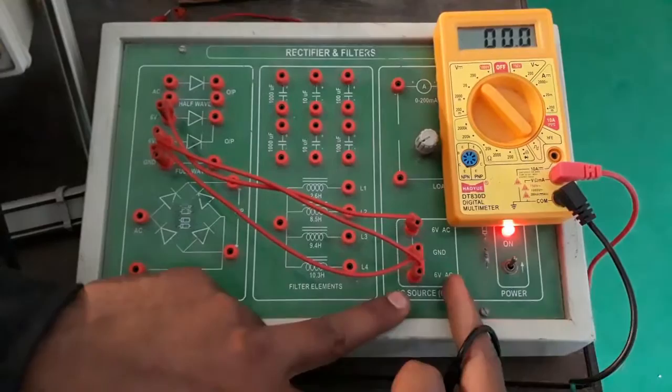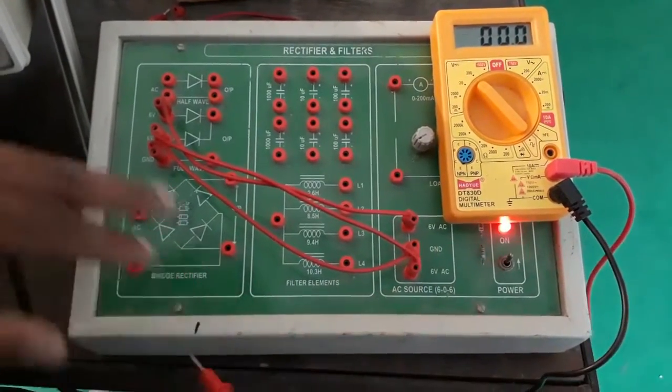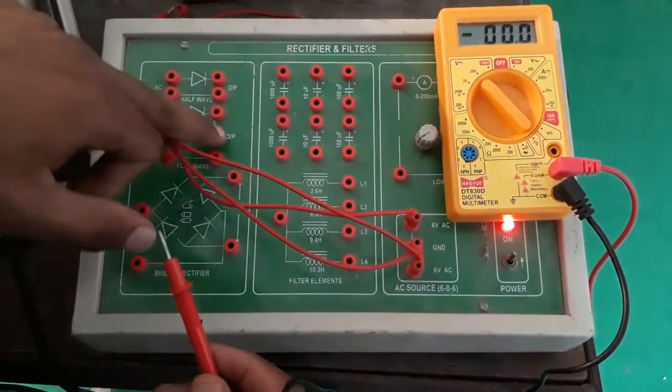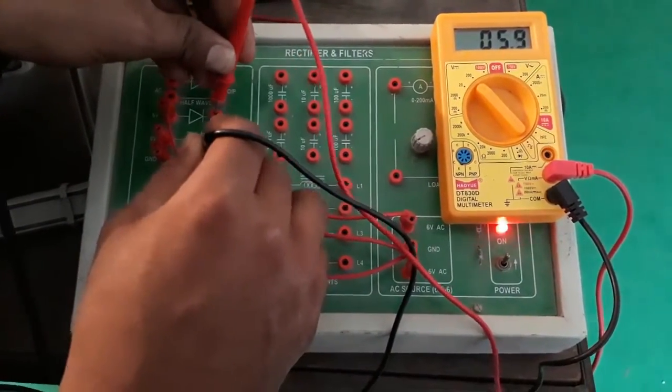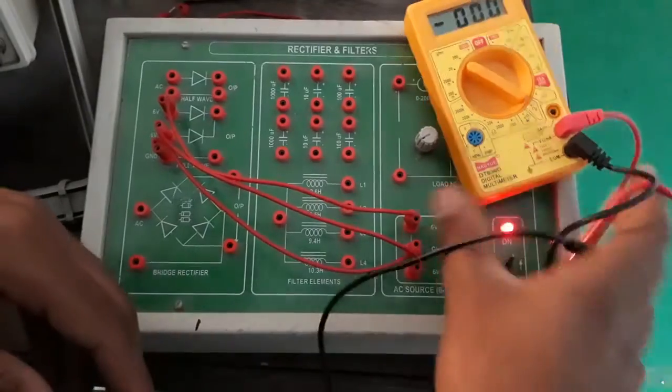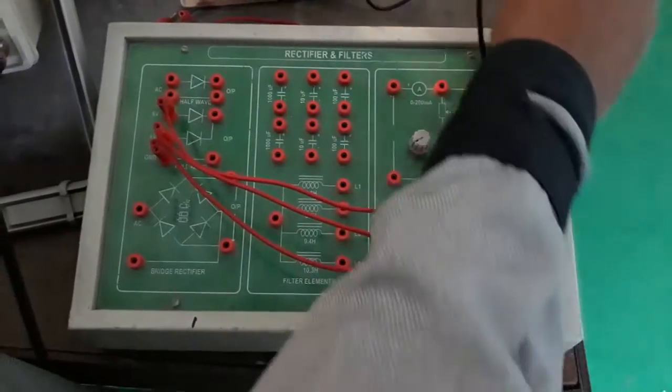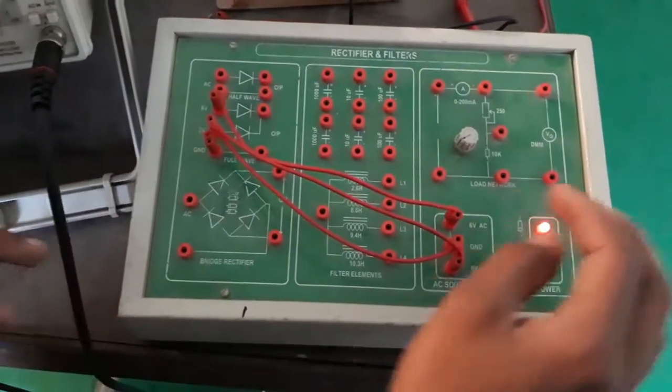This is 12 volts and I am applying. When I have applied, the output will be getting 5 volts, 5.8, 5.9, approximately 5.9 value. By this we have to see the sine wave values in CRO.